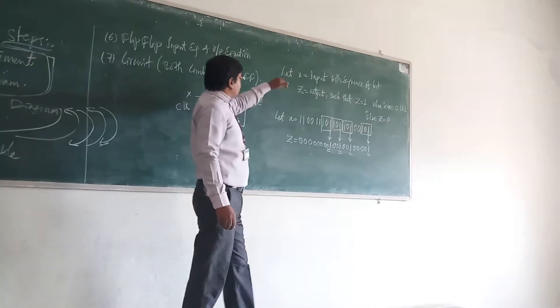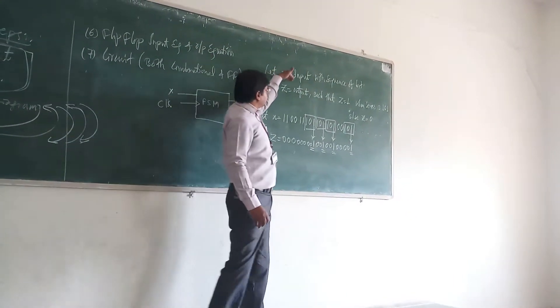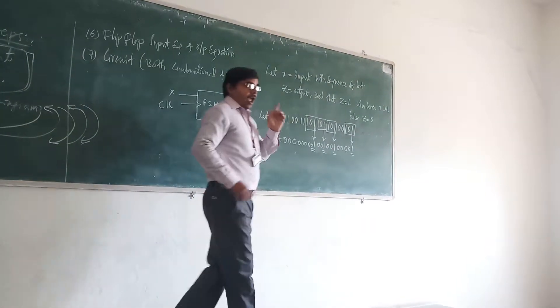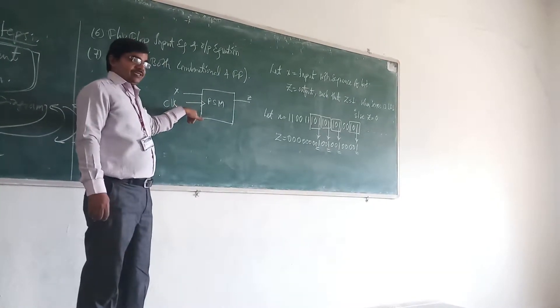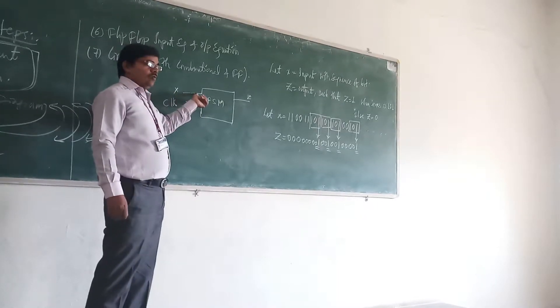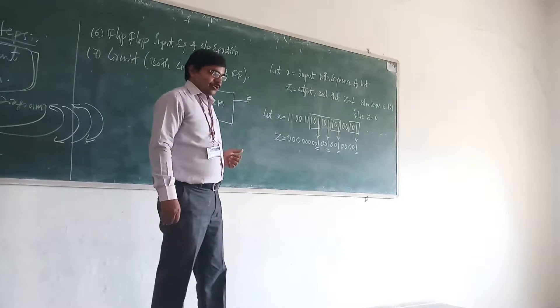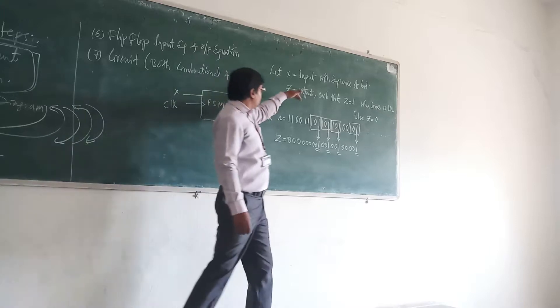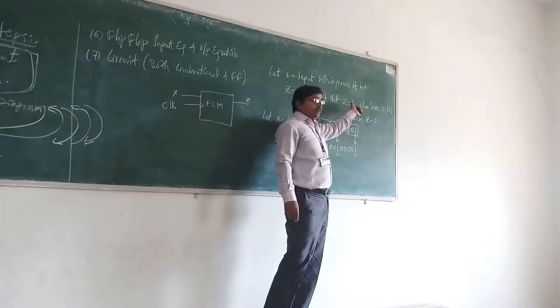Problem statement is: you have x as input and what is this x? x is a sequence of bits and those sequence of bits will be appearing in each clock pulse. So after every clock pulse, here you will have some sequence of 0s and 1s. And z is your output. So what is the condition here? That your z will be 1.